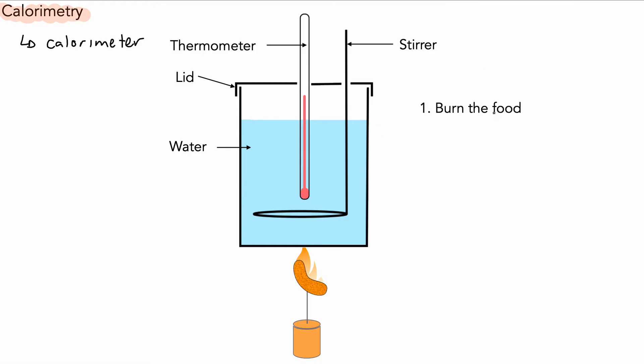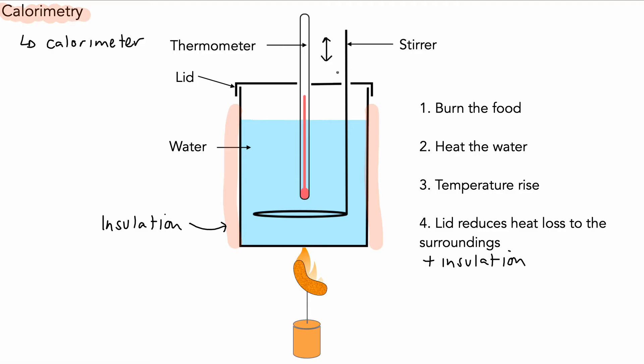We burn the food like last time, we heat the water, and we measure the temperature rise. But this time our apparatus has a lid that reduces heat loss to the surroundings, and we can actually add insulation as well to prevent heat loss. We also have our stirrer which moves up and down to help distribute the heat in the water evenly, giving us a more accurate figure for temperature rise.